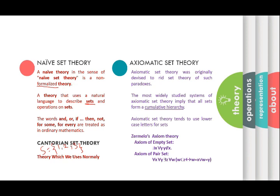Cantorian set theory uses capital letters for representing sets. The next is axiomatic set theory. By the name, it has axioms — which are rules. Axiomatic set theory was originally devised to rid set theory of paradoxes. The most widely studied system implies that all sets form a cumulative hierarchy — sets are always represented in a specific rule format. In axiomatic set theory, lowercase letters are used for representing sets.